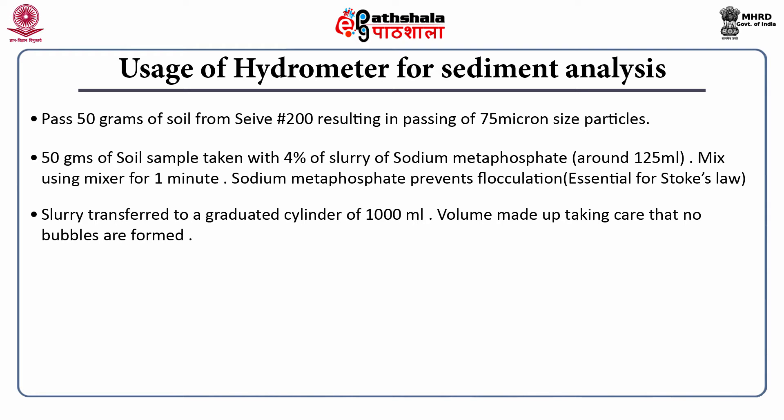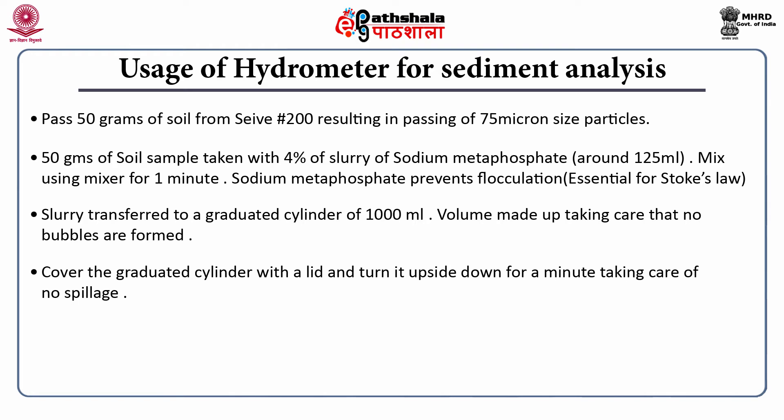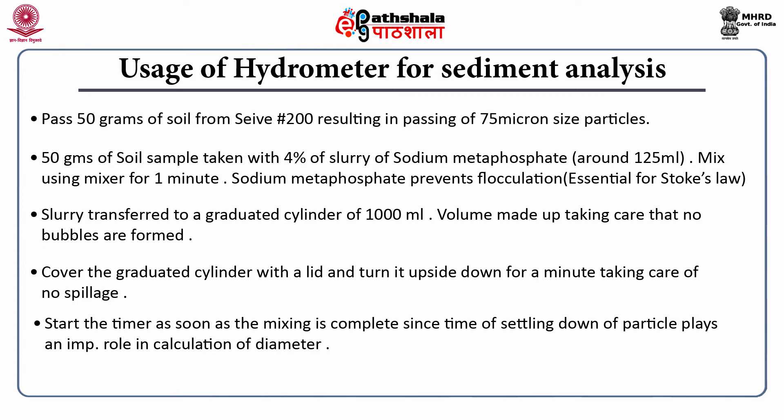Once you have made up the volume to 1000 ml, immediately cover the graduated cylinder with a lid and turn it upside down for a minute, taking care of no spillage. You have to ensure there is no spillage of even 0.5 or 0.25 ml. Then start the timer as soon as the mixing is complete, since time of settling of the particle plays an important role in calculating the diameter. Take hydrometer readings at 15, 30, 60, 120, 240, and 480 seconds.